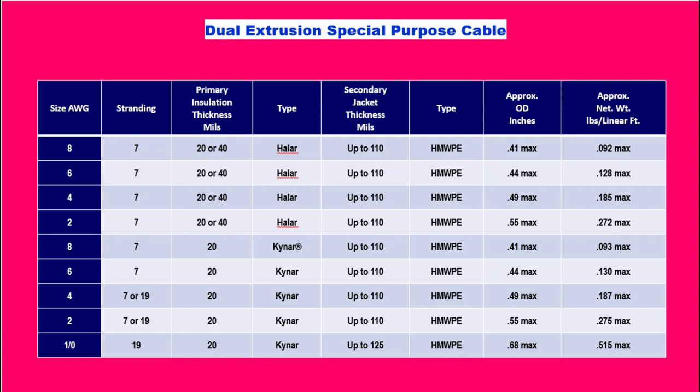For dual extrusion special purpose cable, specifications include size in AWG, stranding, primary insulation thickness in mils and type, secondary jacket thickness in mils and type, approximate OD in inches, and approximate net weight in pounds per linear foot. For example, 8 AWG with 7 stranding, 20–40 mils primary insulation (halar type), up to 110 mils secondary jacket (high molecular weight polyethylene), has a maximum 0.41 inch OD and 0.092 maximum lbs/linear foot. A 1/0 AWG with 19 stranding, 20 mils KYNAR primary insulation, and up to 125 mils high molecular weight polyethylene secondary jacket has a maximum 0.68 inch OD and 0.515 maximum lbs/linear foot.